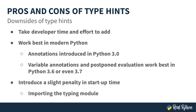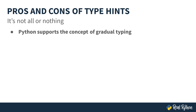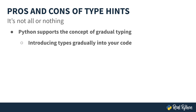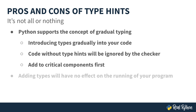Something to keep in mind: type hints are not an all-or-nothing deal. Python supports the concept of gradual typing. What that means is that as you're writing your code, you can introduce your types as you go. Any code without type hints will be ignored by the checker. It makes sense to add type hints to critical components first. Note that adding types will have no effect on the running of your program — your program runs the same.